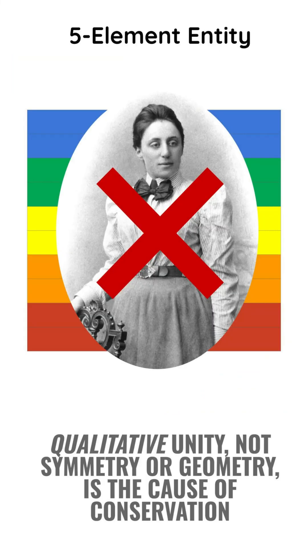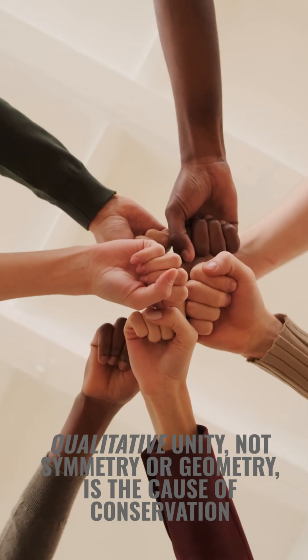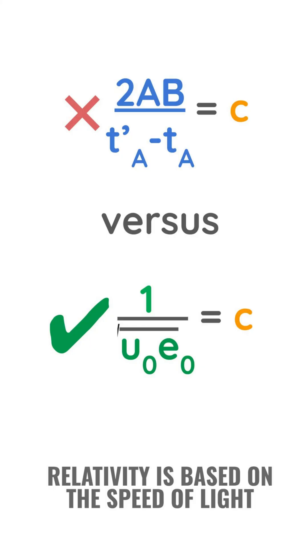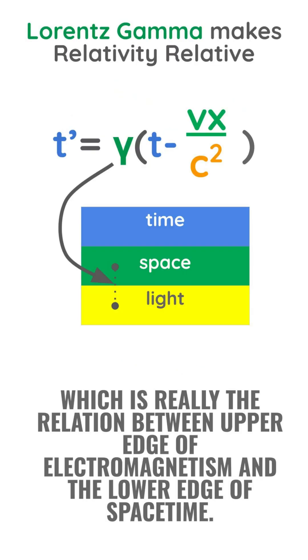Qualitative unity, not symmetry or geometry, is the cause of conservation. Relativity is based on the speed of light, which is really the relation between the upper edge of electromagnetism and the lower edge of space-time.